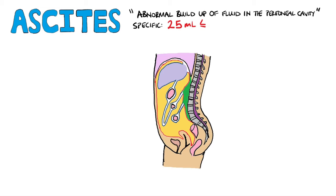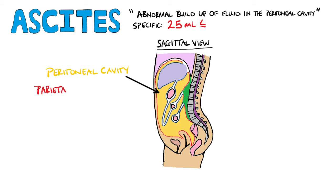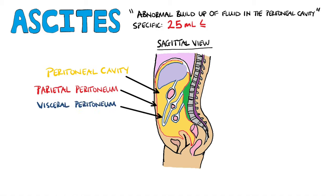First of all, let's look at the abdomen. This is a sagittal view and the peritoneal cavity is this section coloured in yellow. It's formed by a serosal membrane called the peritoneum. The parietal peritoneum is in red, while the visceral peritoneum is in blue. You can see the retroperitoneal space in green.